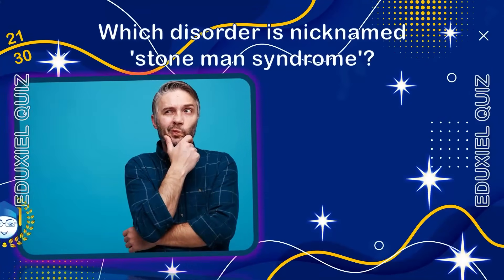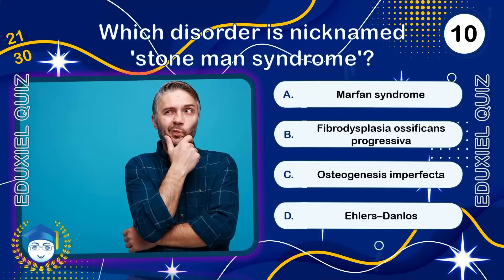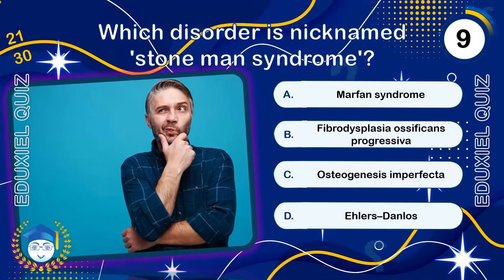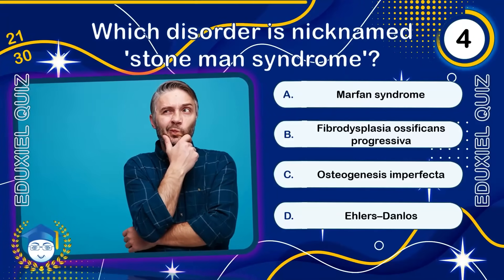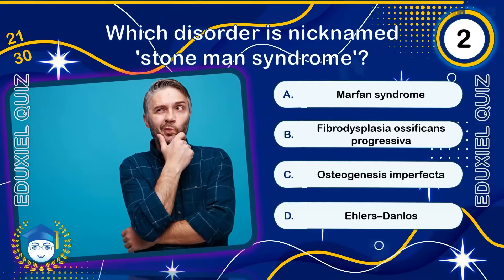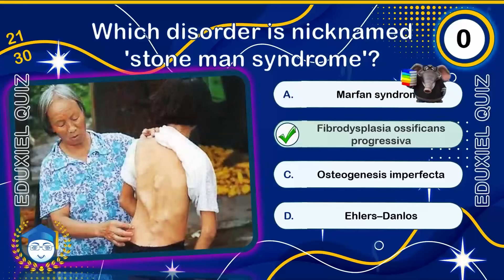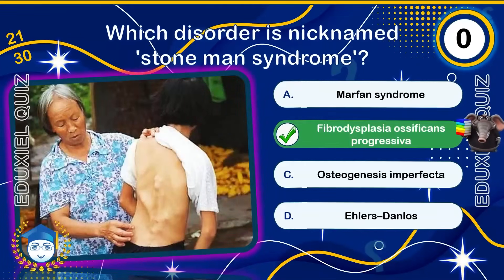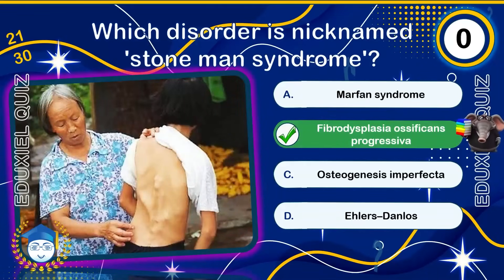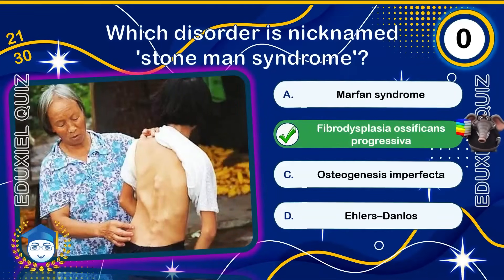Which disorder is nicknamed 'stone man syndrome'? Fibrodysplasia ossificans progressiva (FOP) is a rare disorder where soft tissues gradually turn into bone. Fewer than one in two million people are affected worldwide. Even minor injuries can trigger new bone growth, progressively restricting movement.